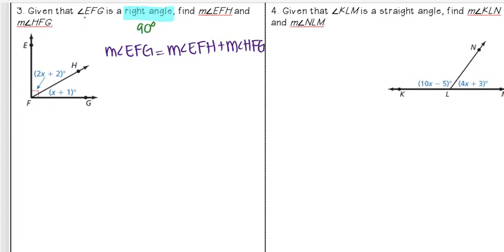The measure of angle EFG is going to be 90 degrees since it's a right angle, and that's going to equal EFH, which is 2x plus 2, plus HFG, which is x plus 1.